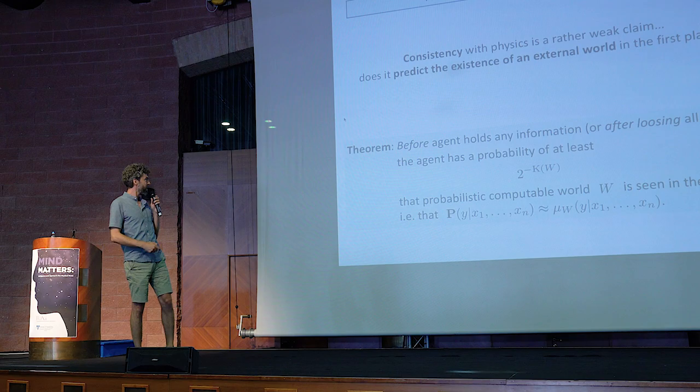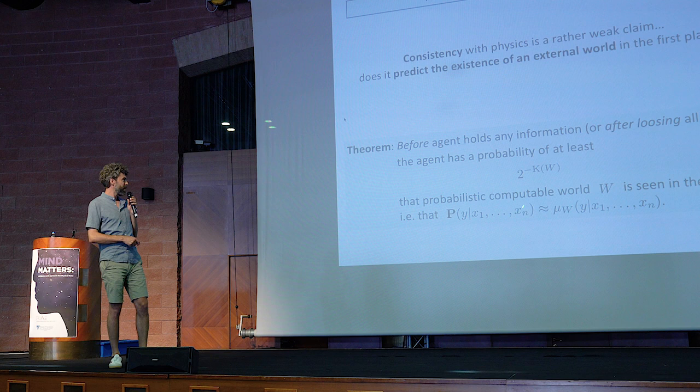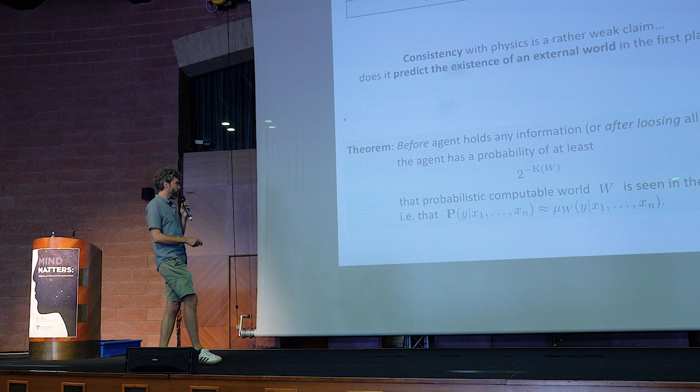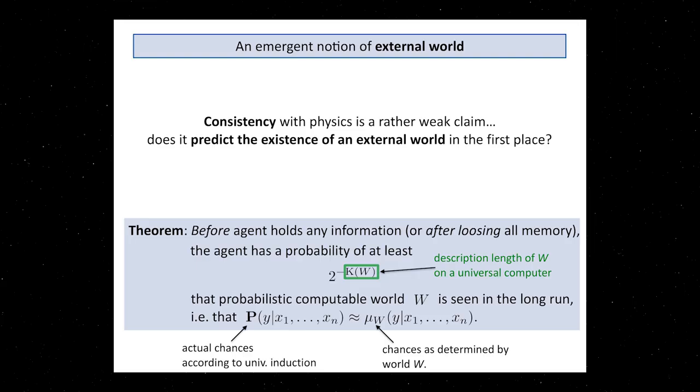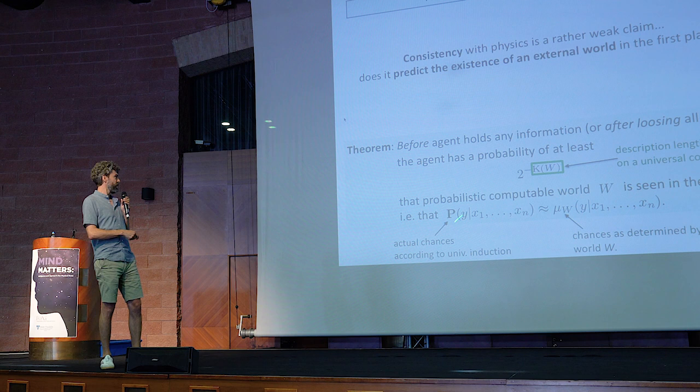You can show something like the following. Let's go back to a moment before the agent has collected any information at the very beginning. It turns out that in the long run, as a prediction for what happens after you've collected many data, then there's a probability of at least two to the minus the complexity of some world W, that this world W will actually determine what you see. So here are the actual algorithmic probabilities that I've claimed to determine what you see. And here is some other probability distribution. This probability distribution comes from some physical world, some computable process that's probabilistic. In the long run, this process will actually be close to the probabilities that you will see.